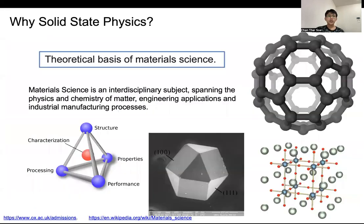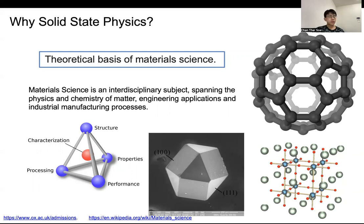Solid-state physics is also the theoretical basis of material science. What is material science? Material science is the interdisciplinary subject spanning physics, the chemistry of matter, and also engineering applications and industrial manufacturing processes. Material science is about how to engineer the material, how we understand the material, and how to do the processing of the material. That's why solid-state physics gives the theoretical basis for how you engineer, design, and process material into real applications.